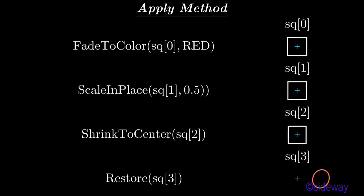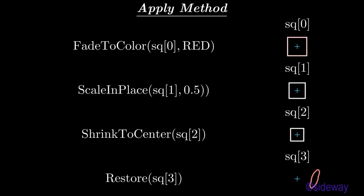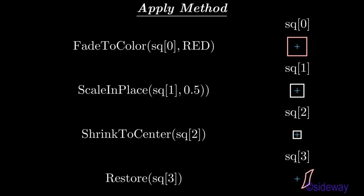Fade to color method is used to transform the color of a mathematical object animatedly. Scale in place method is used to change the size of a mathematical object animatedly.